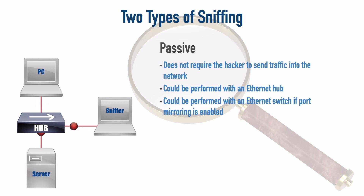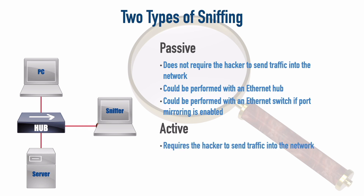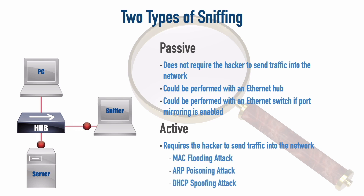If we're not the administrator and have no permission to configure port mirroring on the switch, how do we convince traffic to come to us? That requires sending traffic out into the network — using a MAC flooding attack, an ARP poisoning attack, or a DHCP spoofing attack. But first, let's set up port mirroring on a Cisco Catalyst switch to capture traffic and analyze some unencrypted Telnet traffic in Wireshark, where we'll see username and password information in plain text.